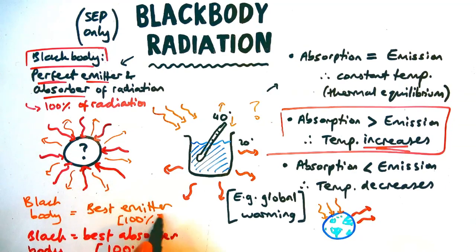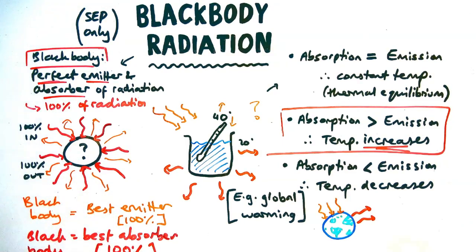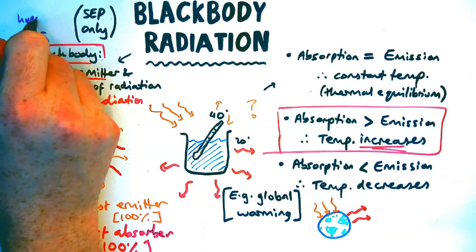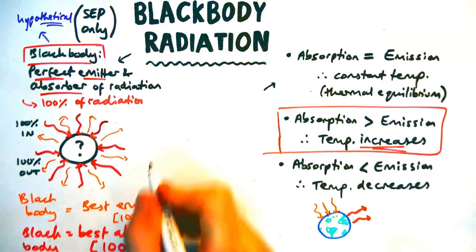So black, we should know, is the best emitter as well. For a black body, that would mean it was emitting 100% of the radiation absorbed. So like I said before, it's a hypothetical construct. There's no object on earth that's a perfect black body, but it helps us make approximations in physics and calculations about temperatures of different objects.